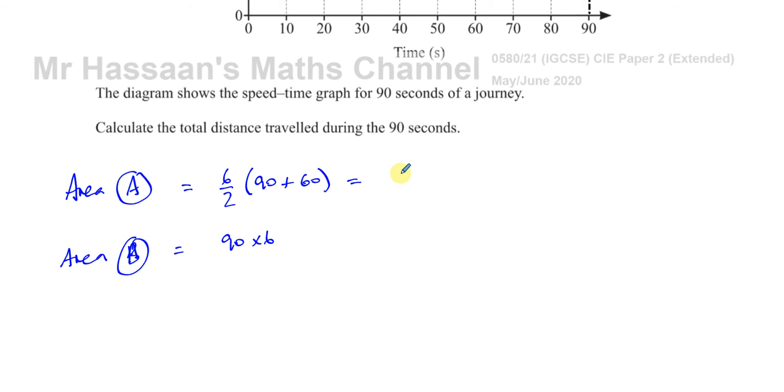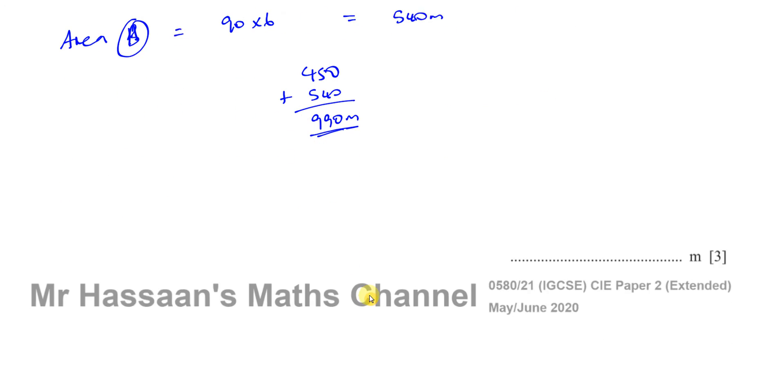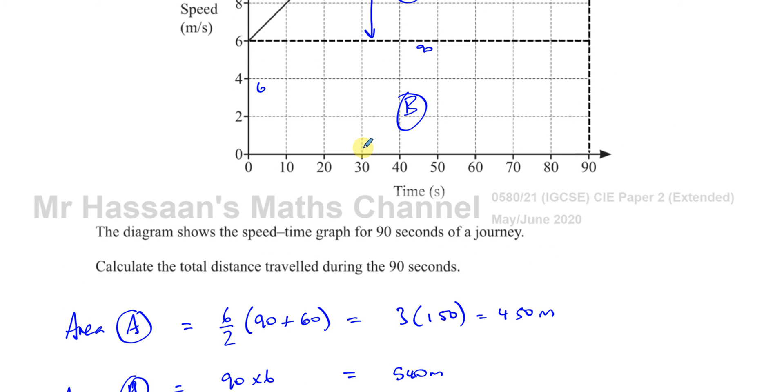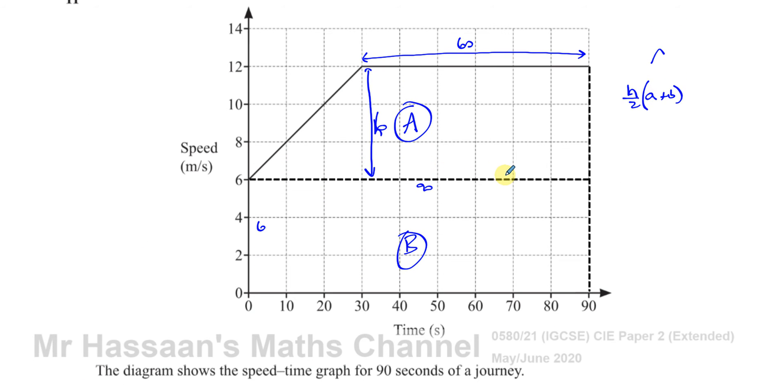So this is going to be 3 times 150, which is 450. That's 450 meters in that section. And 6 times 90, so that's going to be 540 meters. So you have 450 meters plus 540 meters, which gives you 990 meters. That's the total distance traveled by this object, 990 meters.